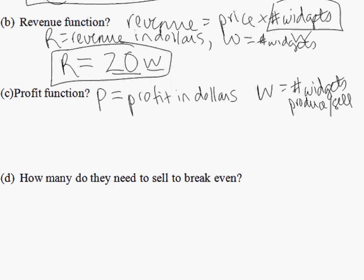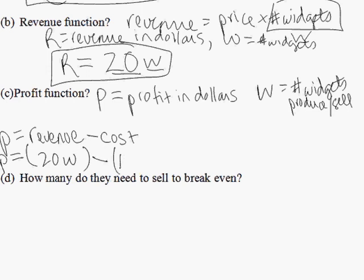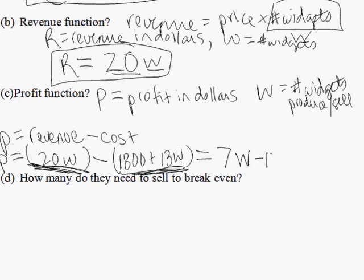So, first I could just note that their profit is the amount of money they bring in, their revenue, minus the amount of money they had to pay out, their costs. So, P, their profit, is 20W, which was the revenue, minus 1800 plus 13W, which was the cost function. So, revenue function minus cost function. So, that comes out to 7W minus 1800.